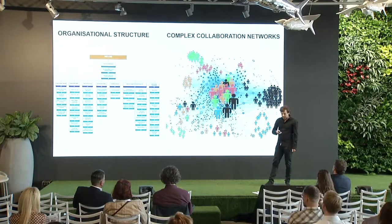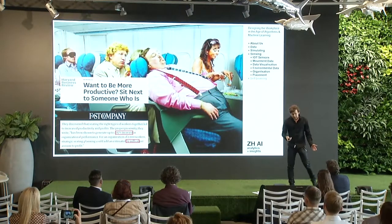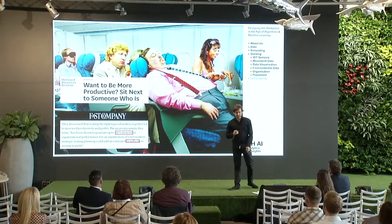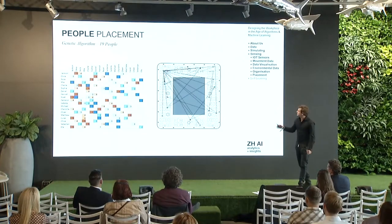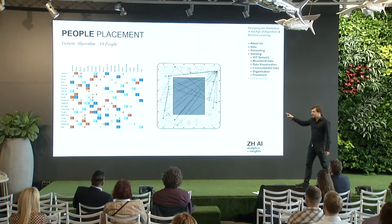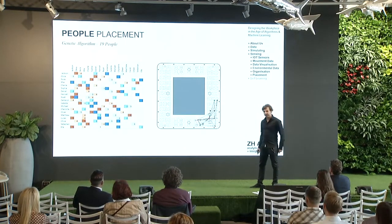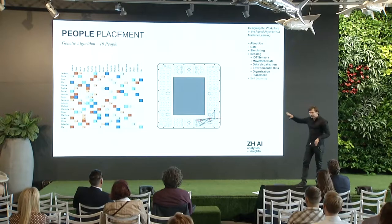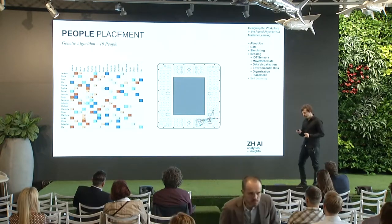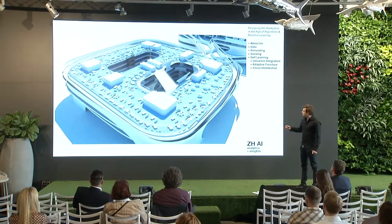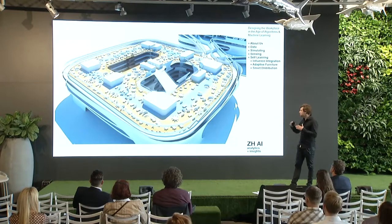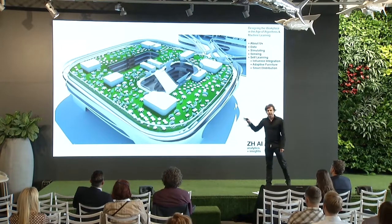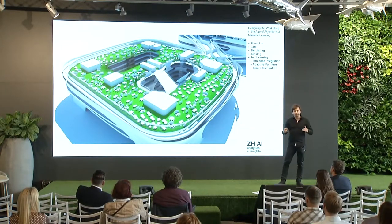Studies show that just sitting next to a more productive person makes you 15% more productive. What if architects turned into a dating agency — finding out the best matches in the workplace to make it productive? You can take this obsession with data gathering and provide floorplates that deliver the most productive matches, tailored to the client. You can see here that the algorithms are searching for the best possible seating setup according to dating-agency algorithms running in the background.